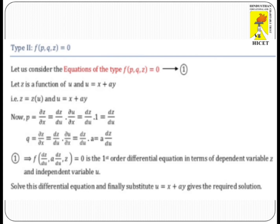After finding P and Q, we substitute again in the given equation. The equation is then formed in terms of Z and U. Using the separable variable method, we separate the variables and solve by integration to get the required complete integral of the given partial differential equation.